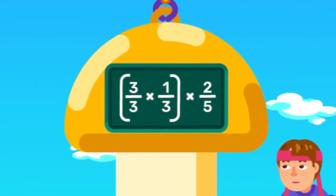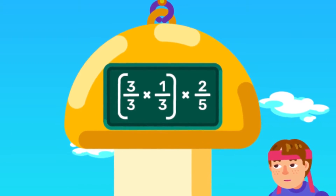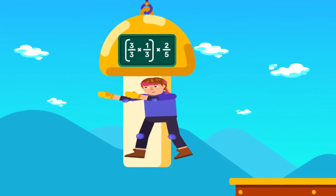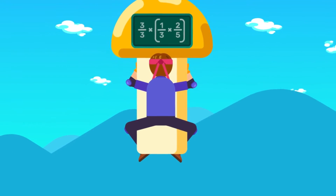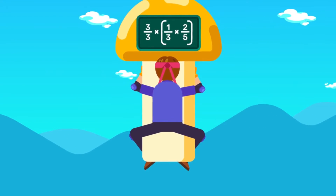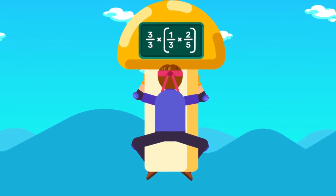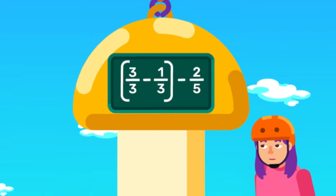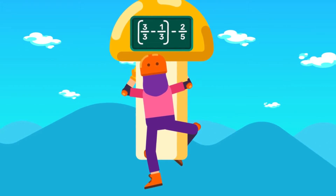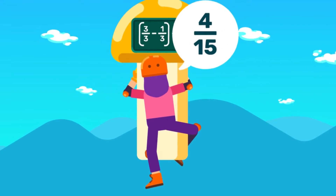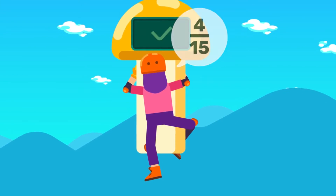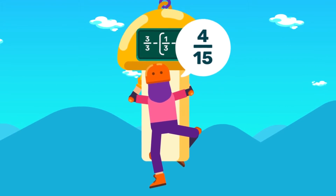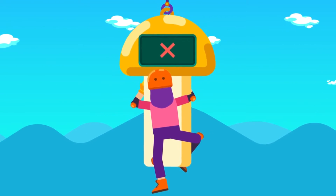2. Associative property states that if there are three or more rational numbers, the grouping can be rearranged without changing the result. This property is only obeyed by addition and multiplication, and will not work for subtraction and division.